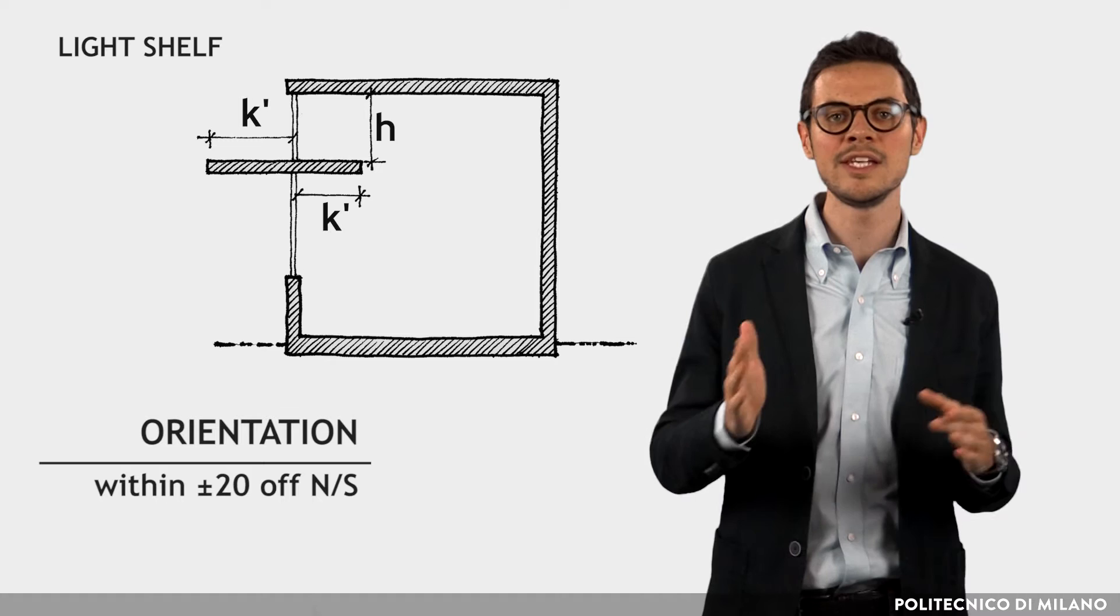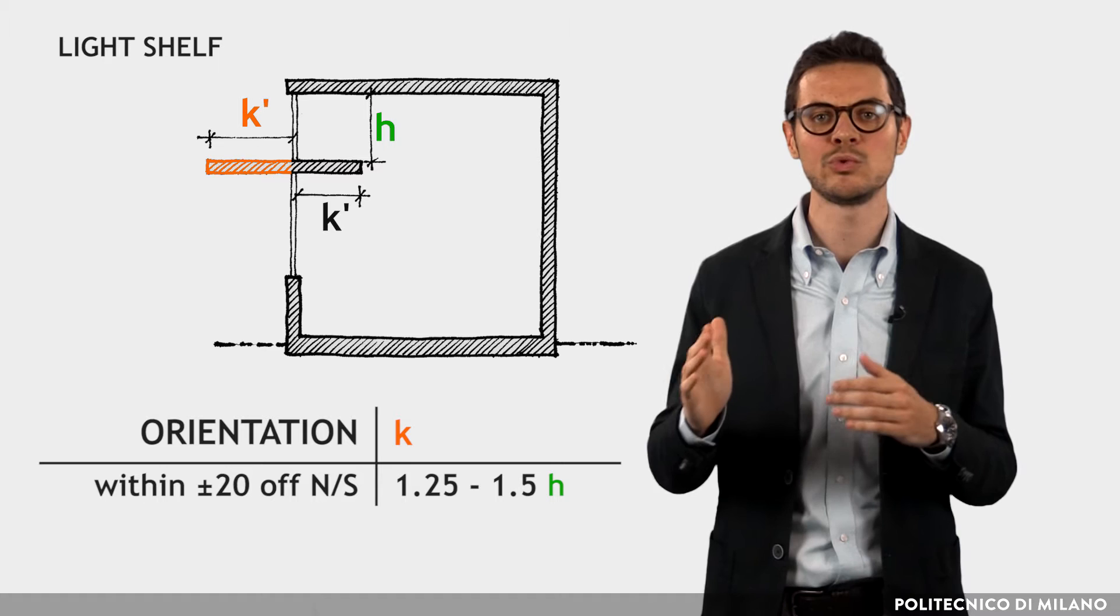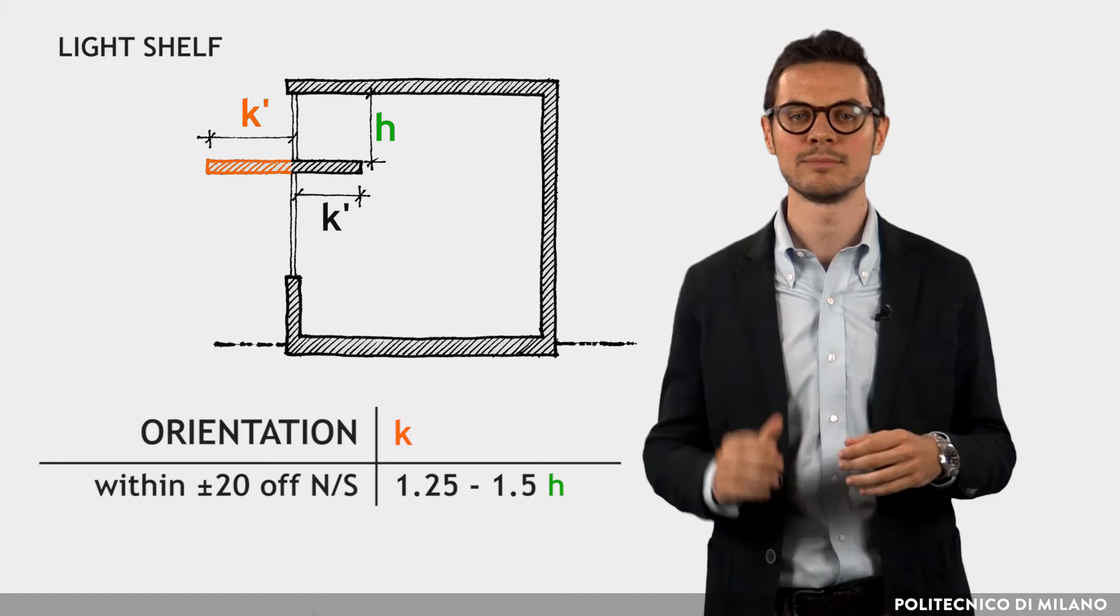In façades oriented within ±20 degrees of south or north near equatorial latitudes, the external light shelf should have a depth between 1.25 to 1.5 times the height of the ribbon windows above.